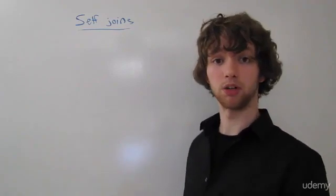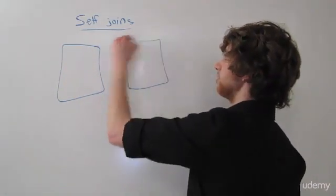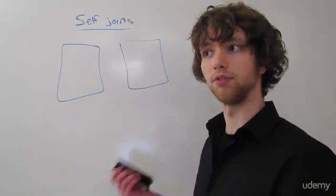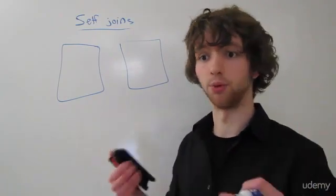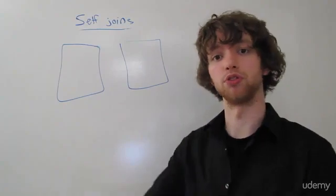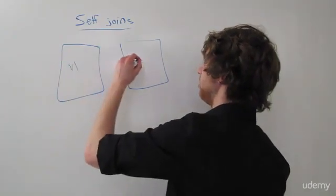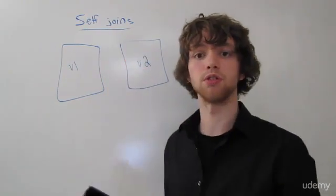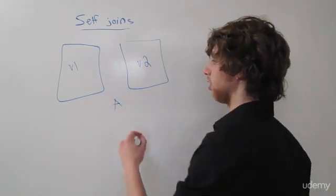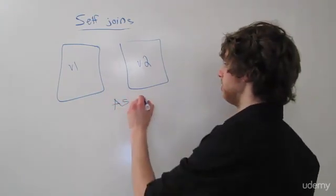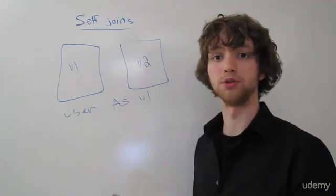To begin, we just kind of think of a name for what we could call each table. We could have the first table, which would also be the user table, and then the second table, which would be another copy of the user table. Now we're not actually copying the data — this is just for illustration. It's going to use that same table to withdraw the data from. We could say this one is v1 and v2. Those are our aliases. We put 'as' after our table and put v1. So we could say user as v1, and then join user as v2.